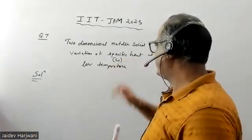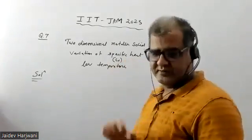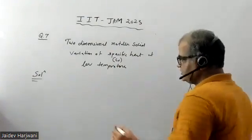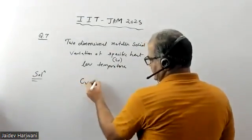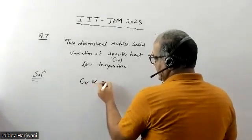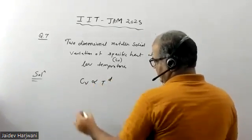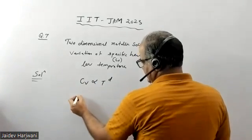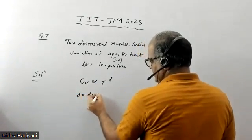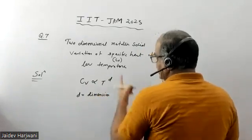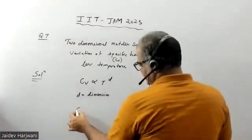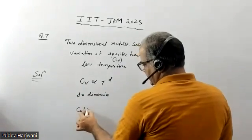How does specific heat vary at low temperature? We know that the specific heat of a solid due to phonons is given by T to the power D, where D is the dimension. Since you have a two-dimensional solid, the specific heat due to phonon contribution will be T squared.